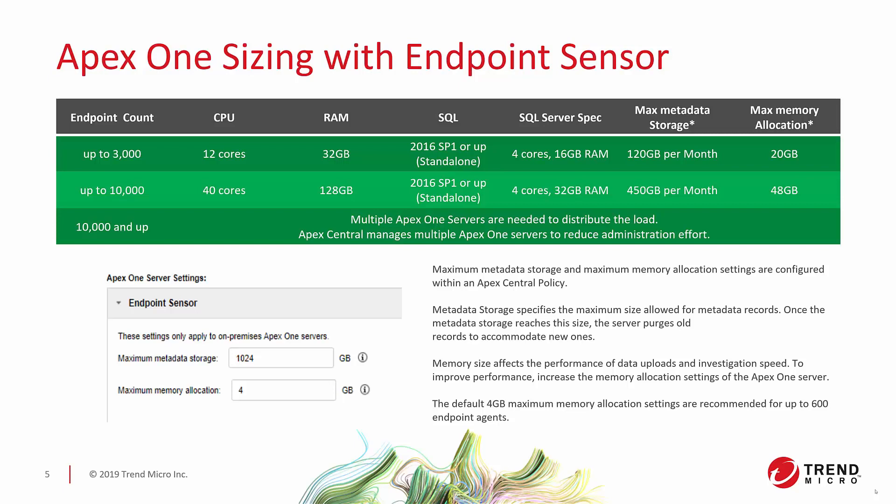When setting the Apex One server policy, you have the two options discussed: max metadata storage and maximum memory allocation. Essentially, how much metadata do you want to store, and how much memory do you want to set aside on your server to process preliminary investigations? The default, when starting fresh without a policy applied, is 4 GB maximum memory allocation for 600 endpoint agents. Once you start reaching that point, you'll need to scale up those totals along with your sizing requirements.